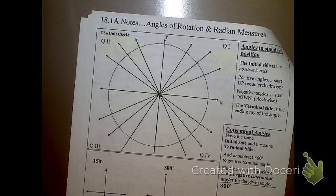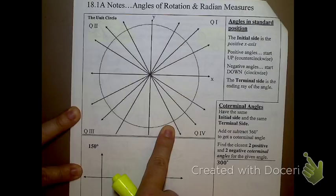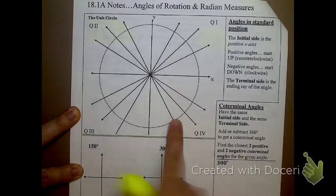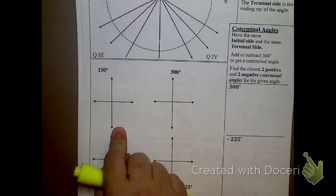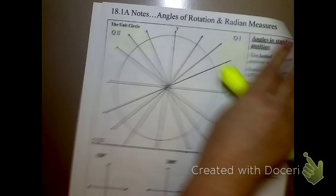A couple things to notice. Number one, this looks just like the circle that you have for your project, and you have drawn in these lines strategically — those lines are very specific. Down here, we have a problem that says 150 degrees, and all I have is an x-axis and a y-axis. How do I make 150 degrees there? Don't I need a protractor? Not for these. When we're talking about our circle angles, they're called angles in standard position.